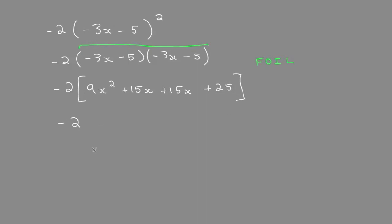Next thing, collect like terms. The very last step, we distribute negative 2 inside the brackets. And I forgot my equal signs.